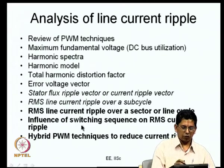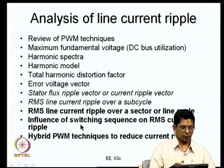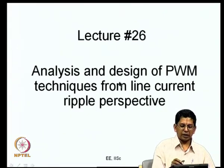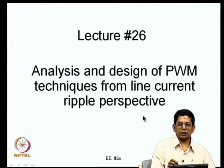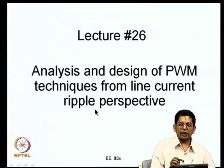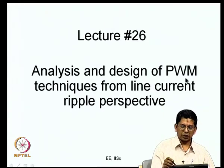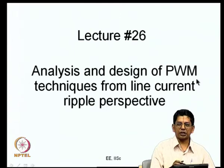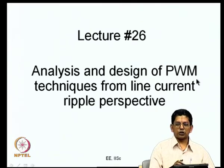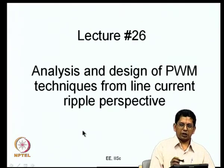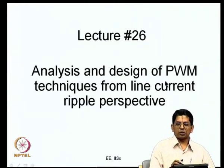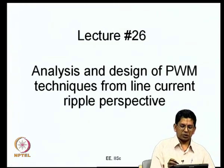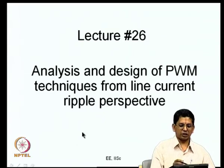These hybrid PWM techniques involve multiple switching sequences. This lecture is specifically on analysis and design of PWM techniques from the line current ripple perspective. We are going to look at the line current ripple produced by different PWM methods. The first PWM method we will consider is conventional space vector PWM, which we did last class, and then we will go on to the other PWM methods — namely bus clamping and advanced bus clamping PWM methods.